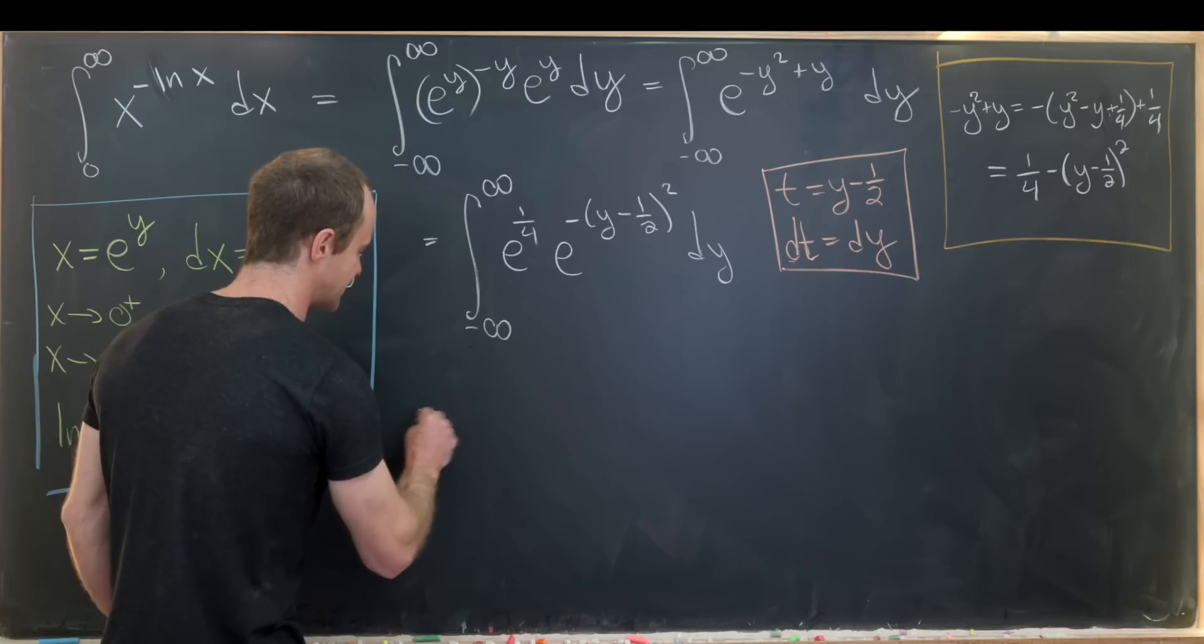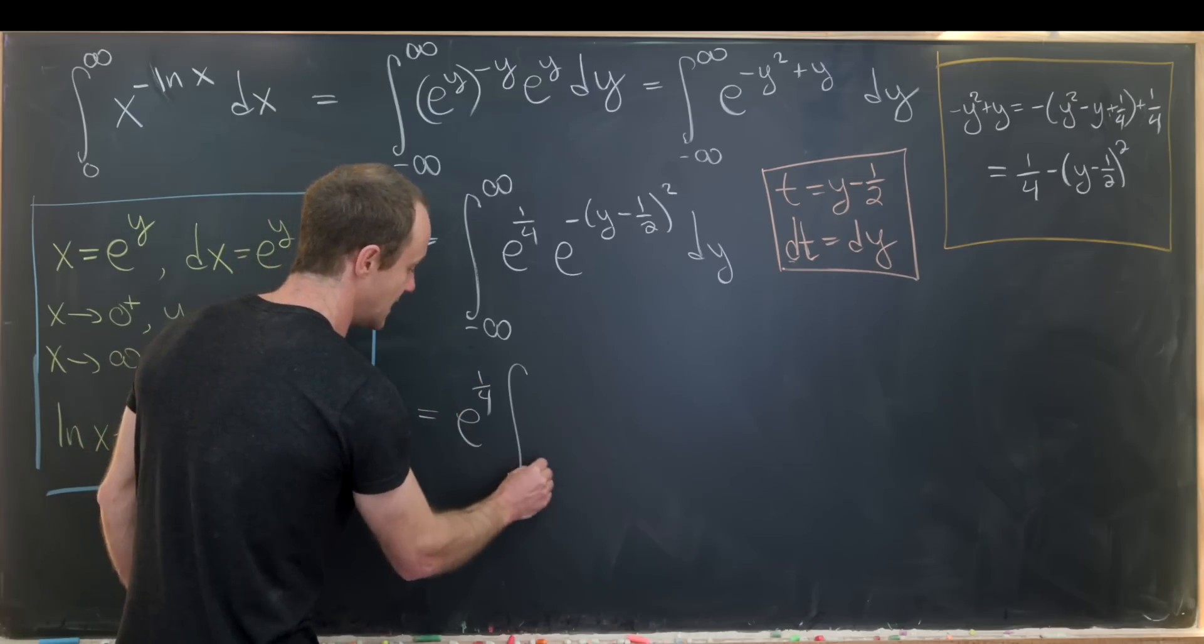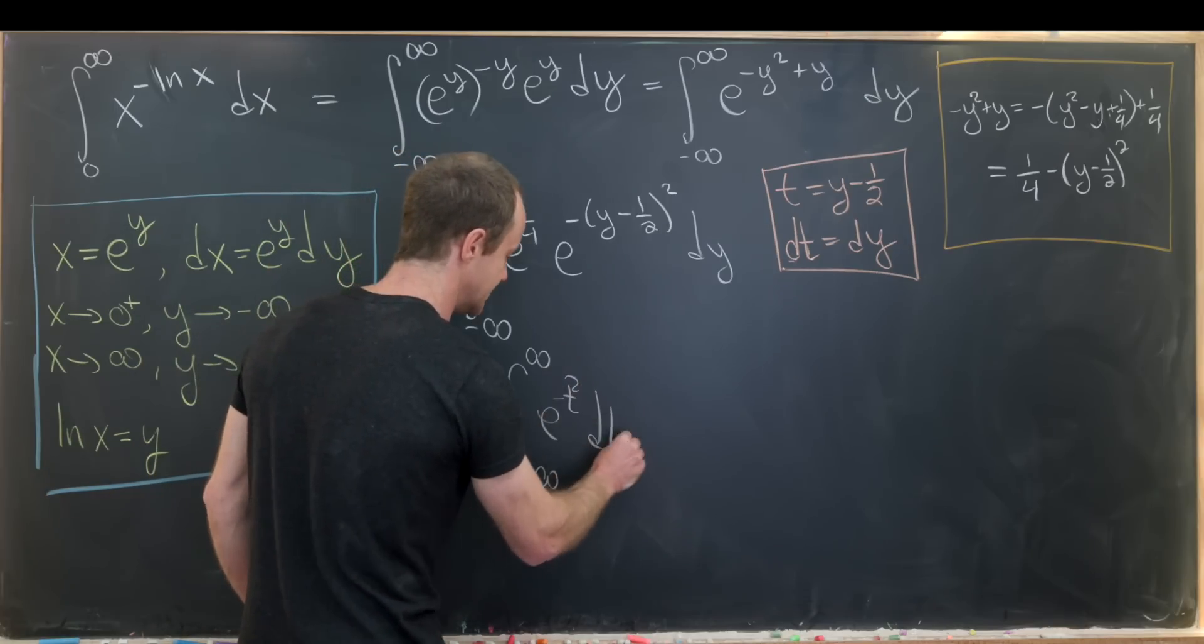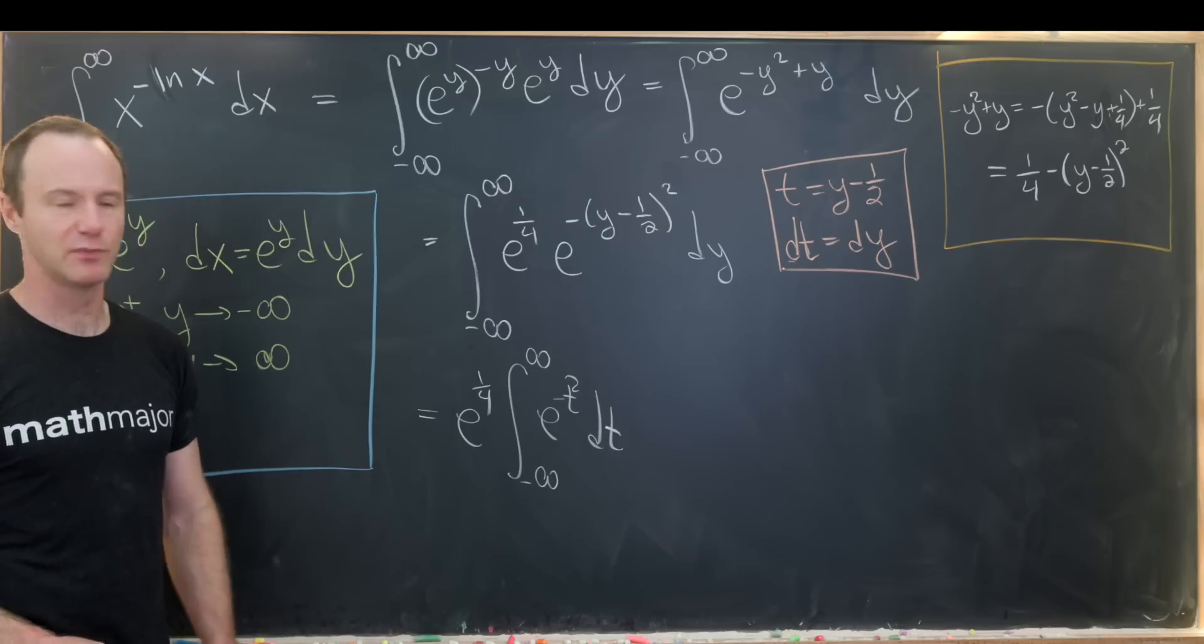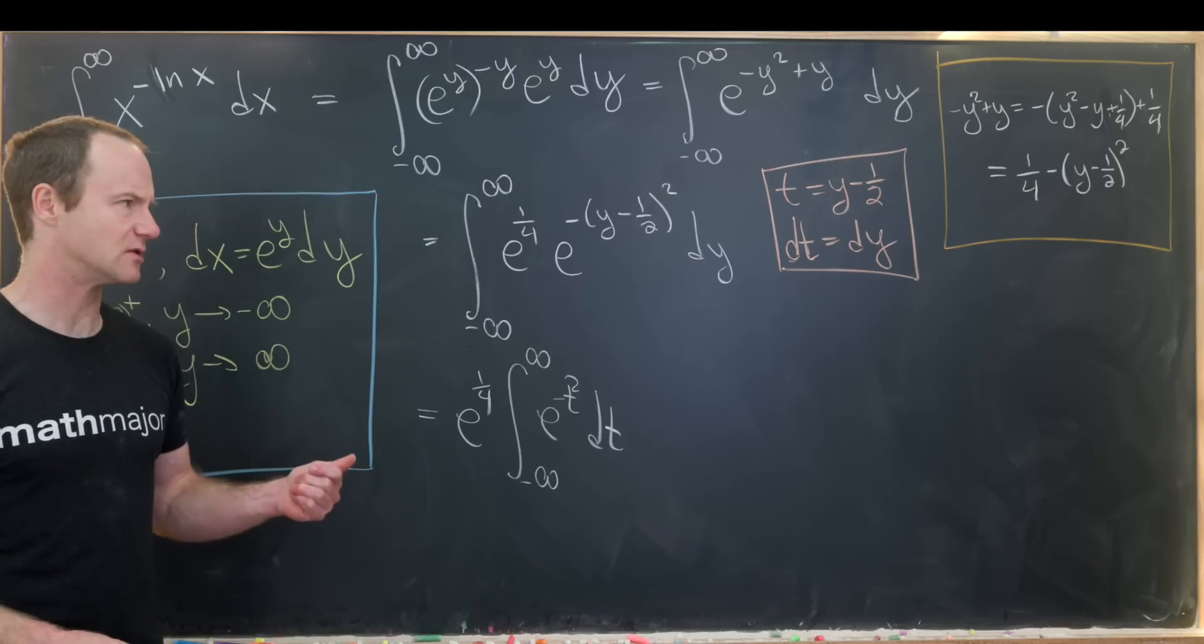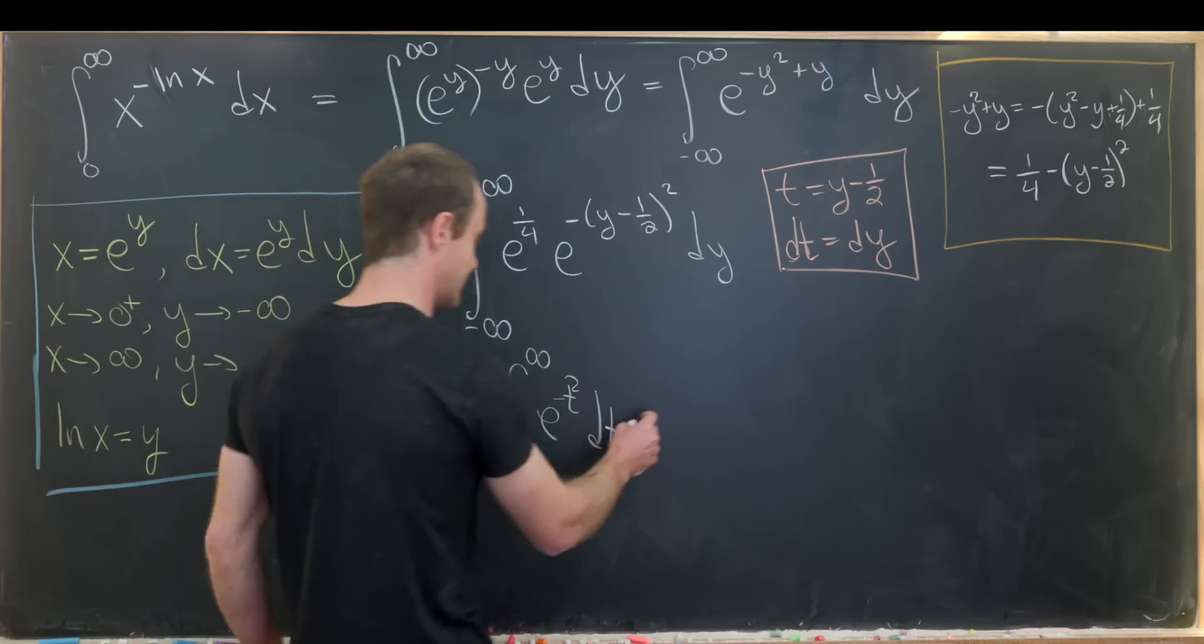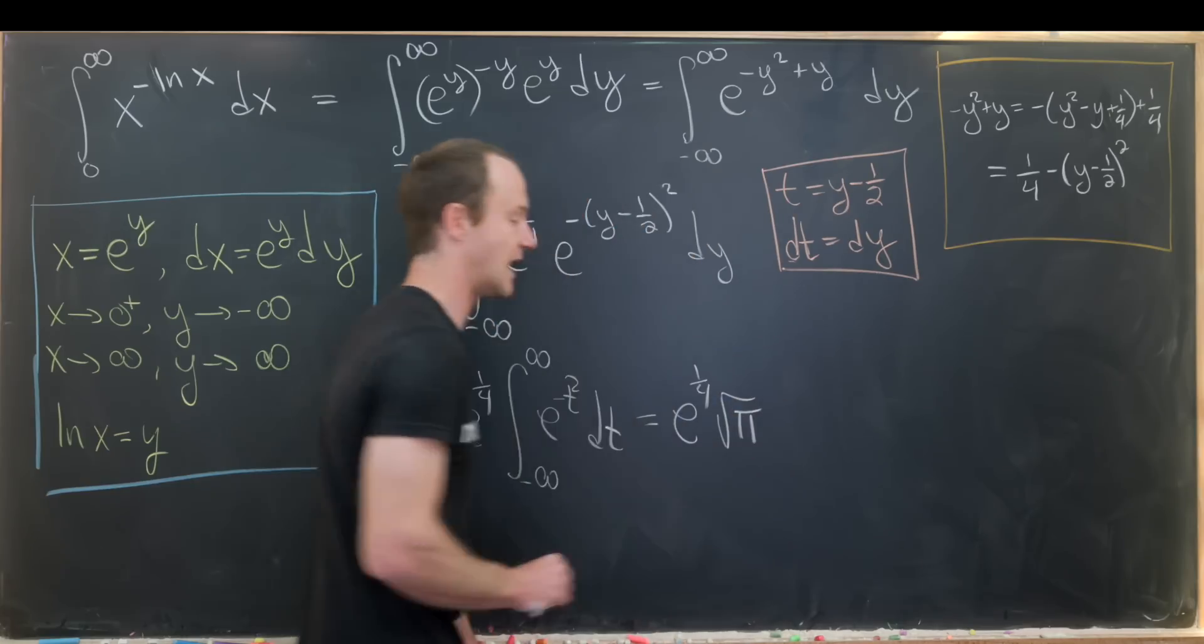So that'll leave me with something like e to the half, which I can bring out front, and then the integral from minus infinity to infinity of e to the minus t squared dt. We've gotten to the famous Gaussian integral. I've done a couple of videos where I evaluated the Gaussian integral. Maybe I'll link one right up here. And then we'll just use that value. This gives me e to the one quarter times the square root of pi.